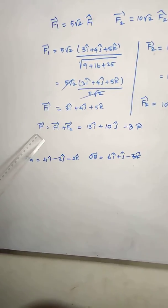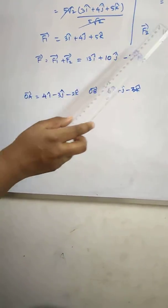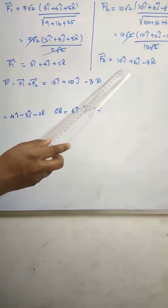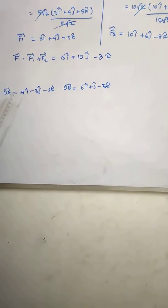Resultant force F vector is equal to F1 vector plus F2 vector. Add two vectors: 3 plus 10 is 13, 4 plus 6 is 10, then 5 minus 8 is minus 3k.